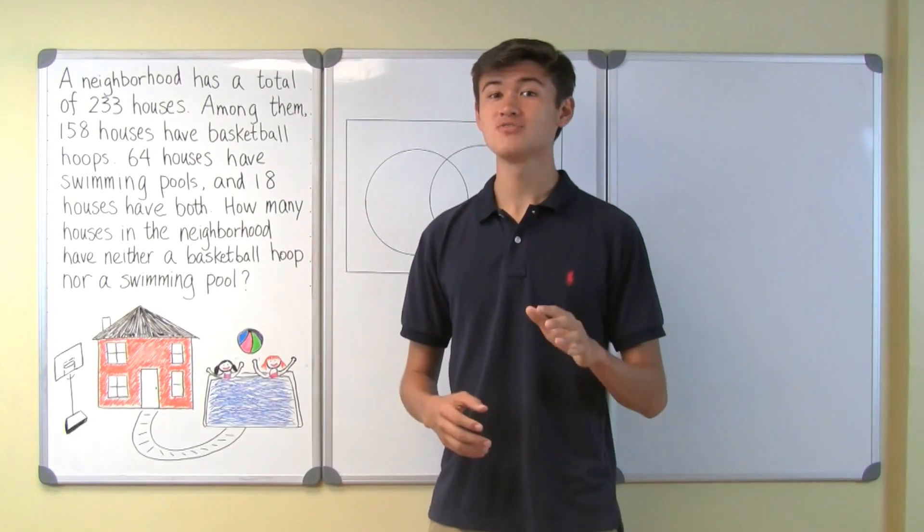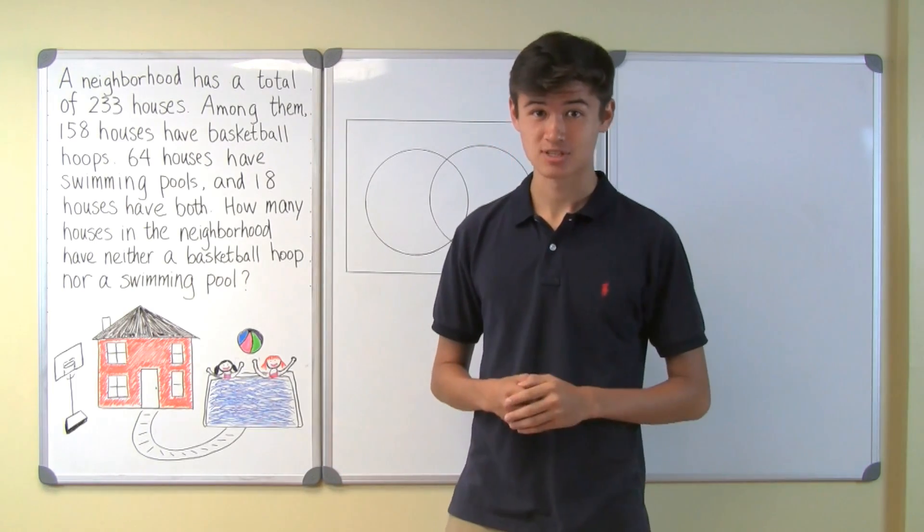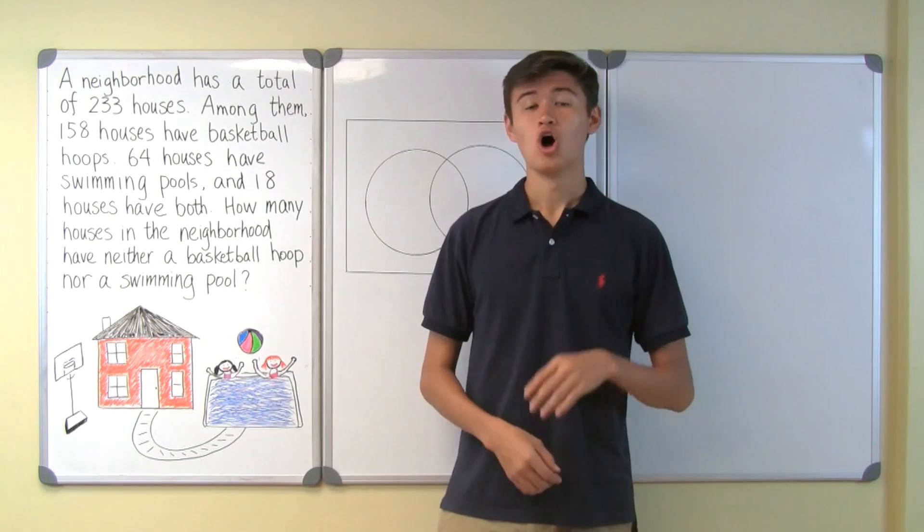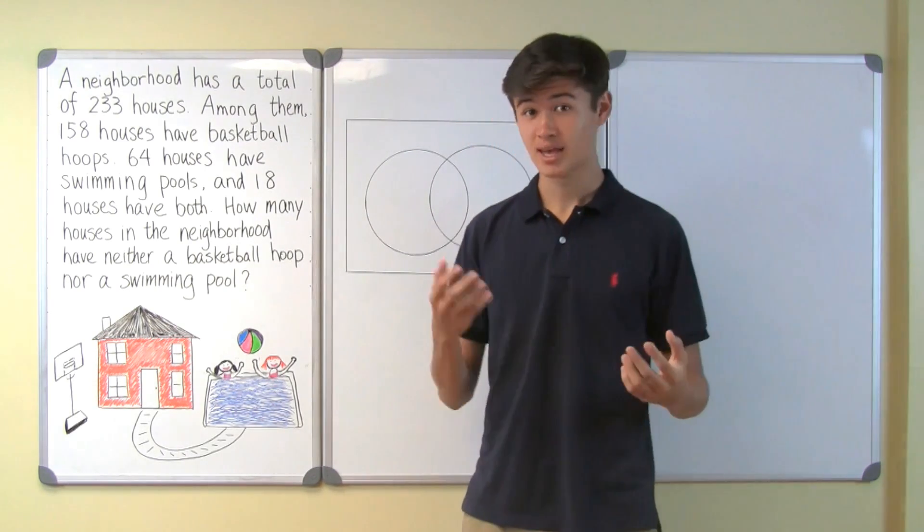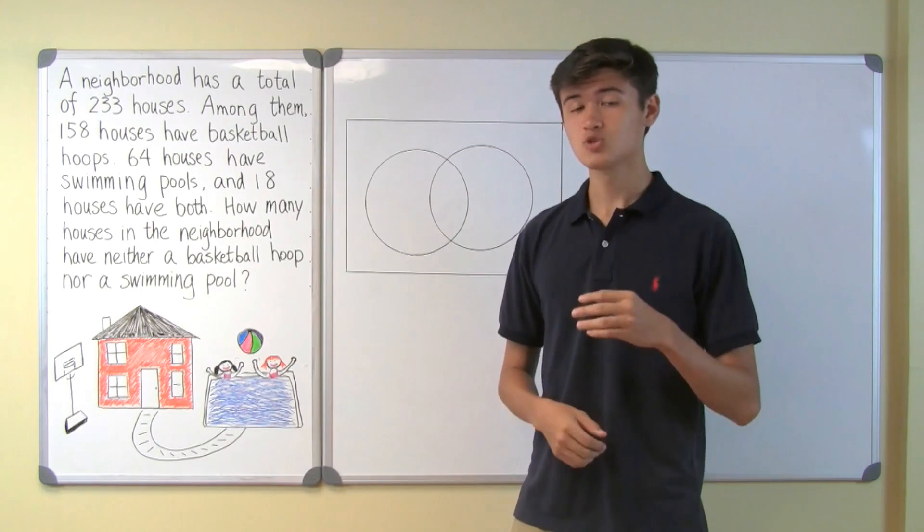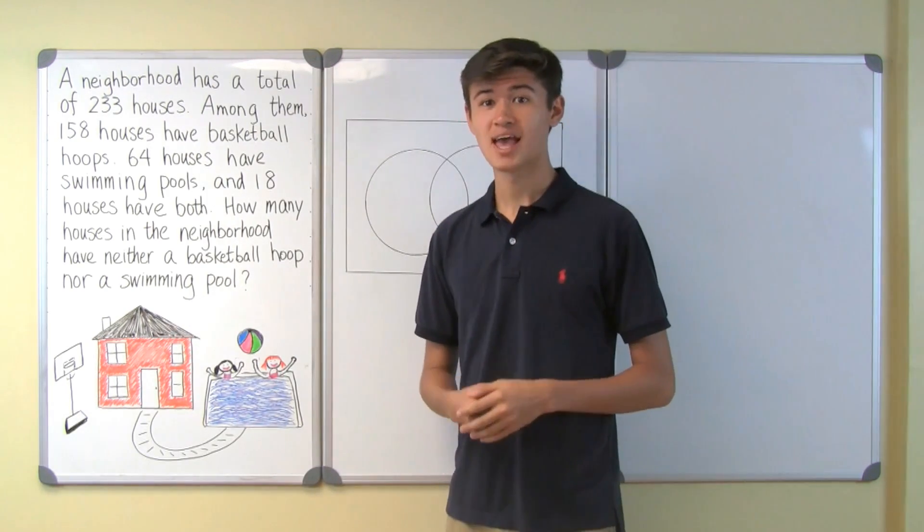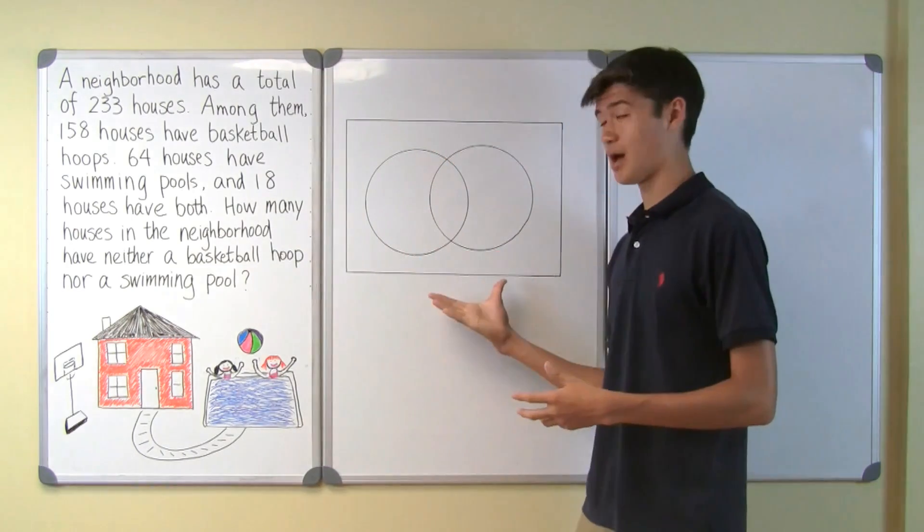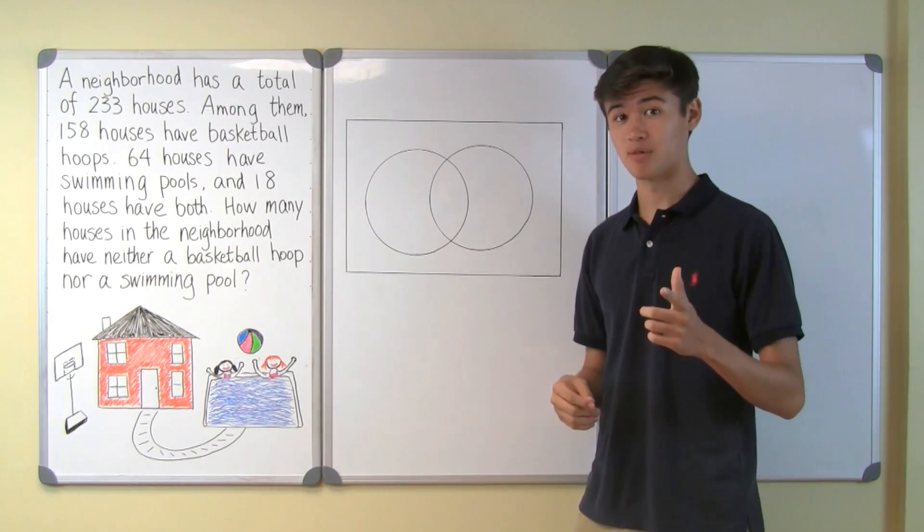Thanks, Yong. By the looks of it, we've got two groups of houses: houses with basketball hoops and houses with swimming pools. Also, there are houses with both basketball hoops and swimming pools. Since we're dealing with two groups of objects, and there are objects belonging to both groups, a Venn diagram is the perfect tool for us to solve this problem.